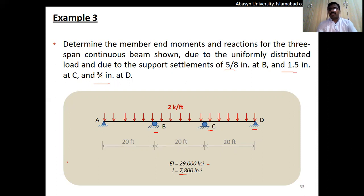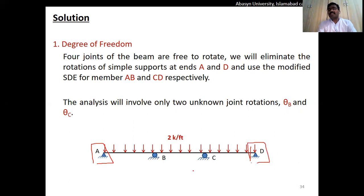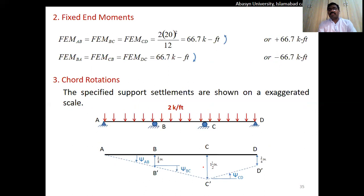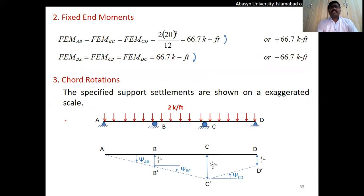You can have multiple support settlements or just one, depending on the conditions. Following the same steps: the exterior ends A and D are pin supports so their moments are zero. Using the modified equations, the unknown joint rotations are only theta_B and theta_C, giving two degrees of freedom.